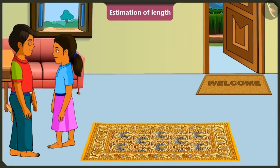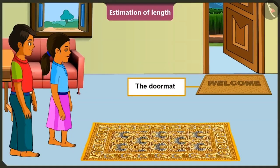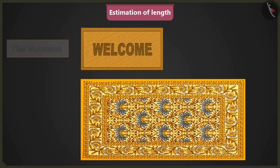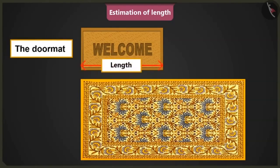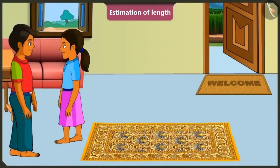Okay, Mintu, now tell me, what will be the length of the door mat that is placed there? If the length of the door mat placed near the door is half that of this carpet, then the approximate length of the mat should be equal to five foot span. Rightly said, Mintu.